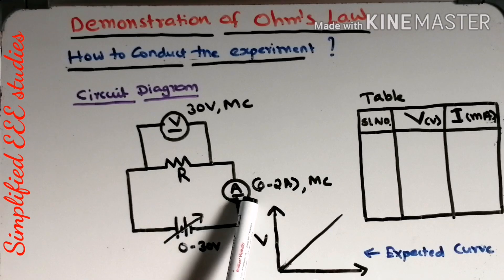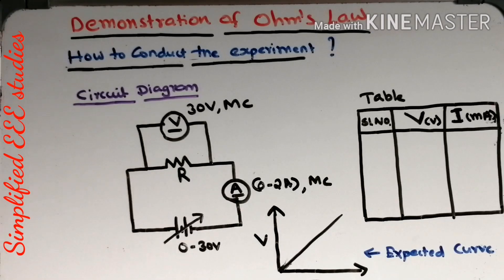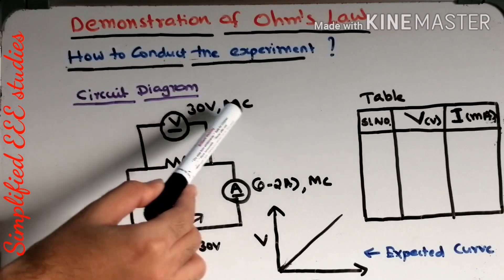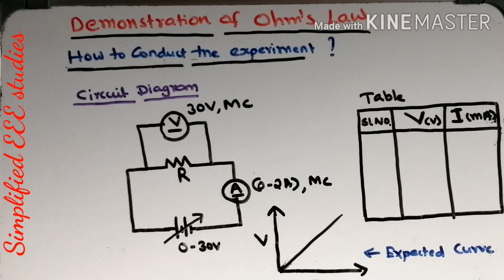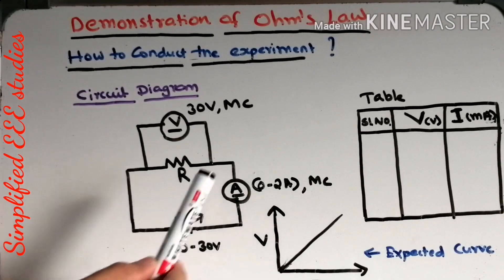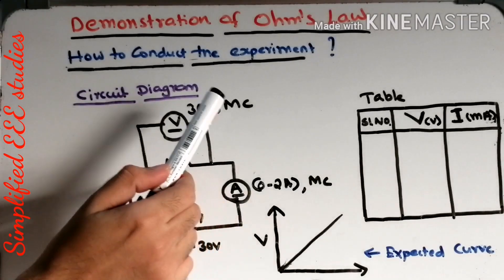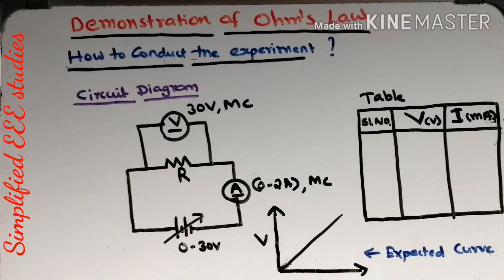The ammeter will always be connected in series. Both the voltmeter and ammeter are moving coil type instruments. Moving coil means they are applicable only for DC measurement, because this is a DC circuit. So to measure DC quantities, you have to use moving coil type instruments.